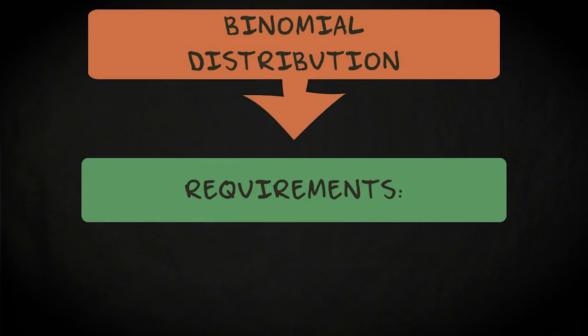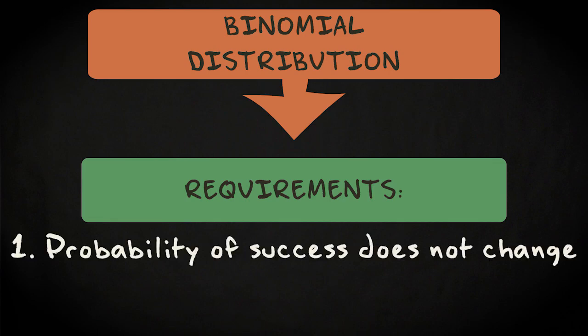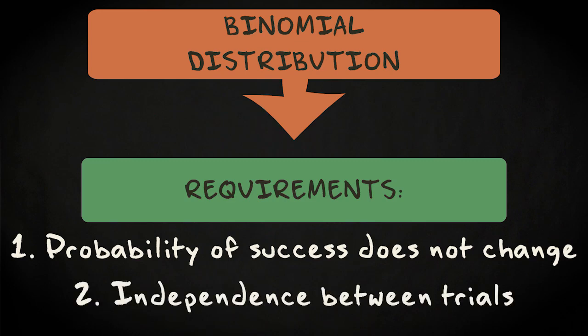There are two conditions to be met before you can be certain that a random variable follows a binomial distribution. The first is that the probability of success in each separate trial is the same throughout the experiment. And the second is that trials are statistically independent. This means that the result of one trial does not depend on the results of others.